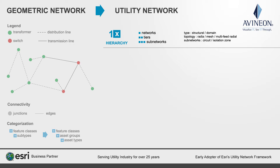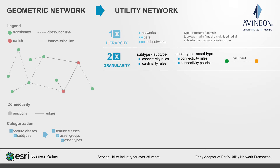This marks the first reason why utility network is more capable than geometric networks. Now let us move on to the mechanics of how connectivity is put together. For those familiar with configuring a geometric network, the connectivity rules allowing which junction or edge can or cannot connect with another are defined at the subtype level. With utility network, these rules are set up using asset types. The ability to define connectivity rules at a granular level marks the second reason why utility network is more capable than the geometric model.